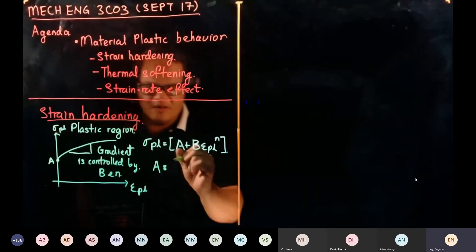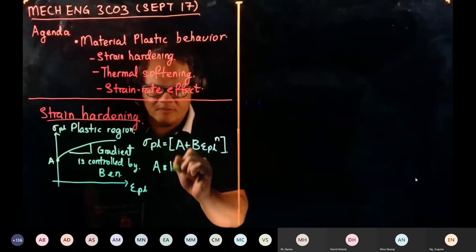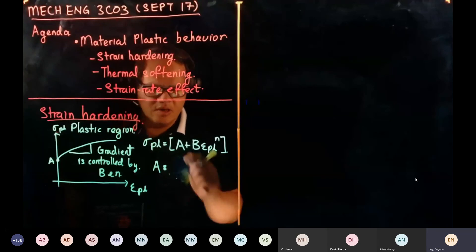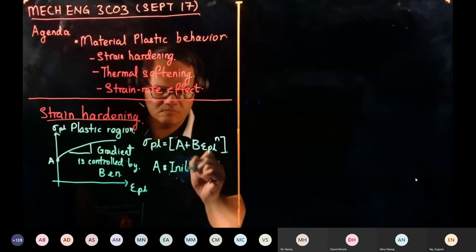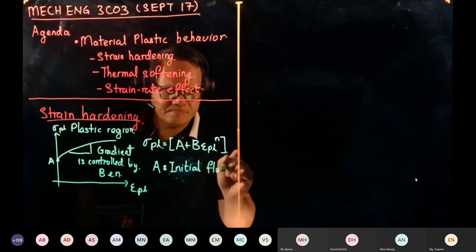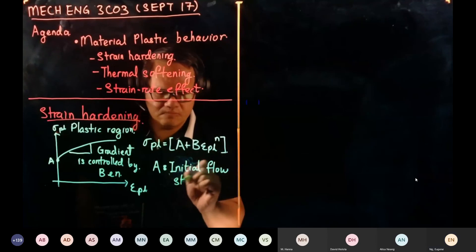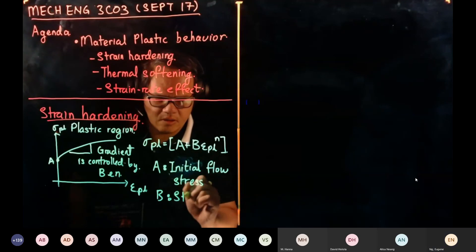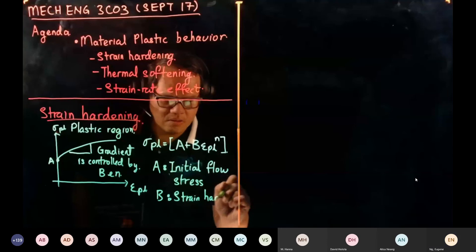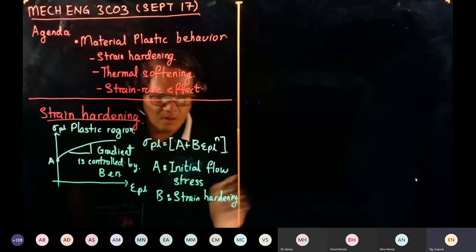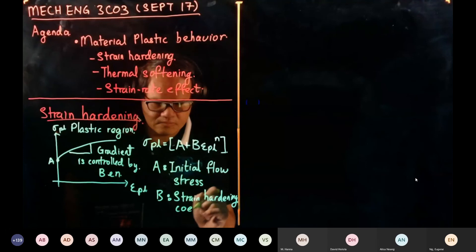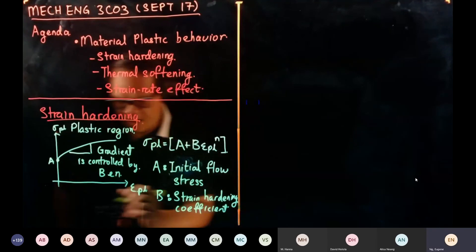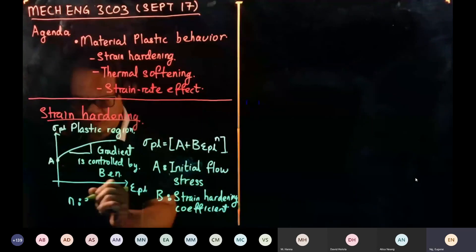So to recap: 'a' is the plastic stress, or initial flow stress. 'b' is our strain hardening coefficient. And 'n' is our strain hardening index.